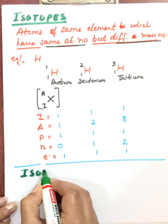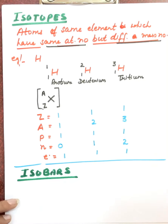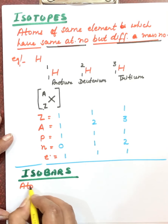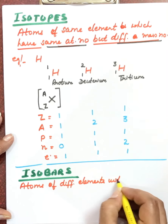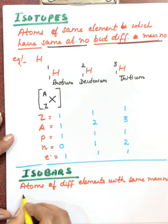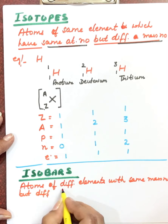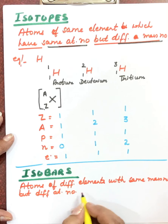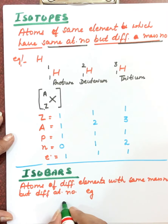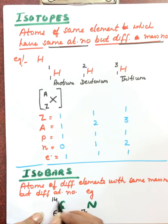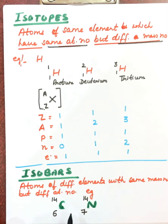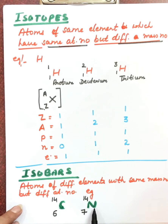After isotopes, we have isobars. Isobars are atoms of different elements with the same mass number but different atomic numbers. For example, carbon has atomic number six and nitrogen has atomic number seven, but both can have a mass number of fourteen. These two represent isobars — atoms of different elements with the same mass number but different atomic numbers.